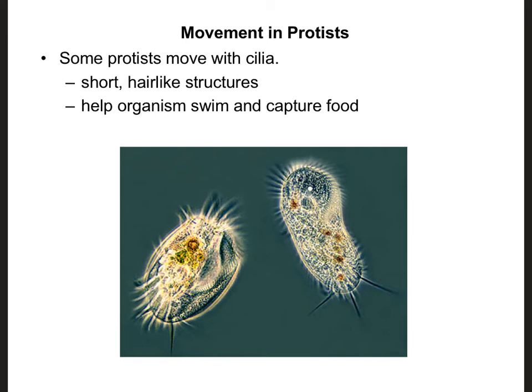Cilia aren't just unique to protists — we also have cilia on some of our own cells. We don't use them to swim, but for example, we have cilia on cells lining our trachea and respiratory pathway, where they help sweep out foreign objects from our breathing track.